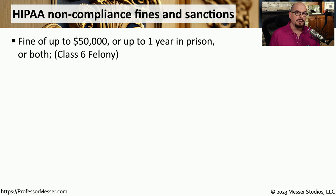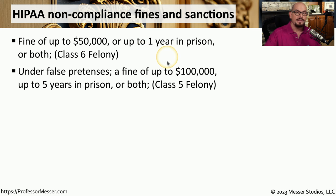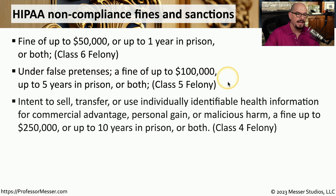We mentioned earlier that there can be significant penalties for being out of compliance. A good example of this are the HIPAA non-compliance fines and sanctions. It could be a fine of up to $50,000 US dollars, or up to one year in prison, or both, because that would be a class 6 felony. If this compliance violation is done under false pretenses, the fine goes up to $100,000, up to five years in prison, or both, and that would be a class 5 felony.